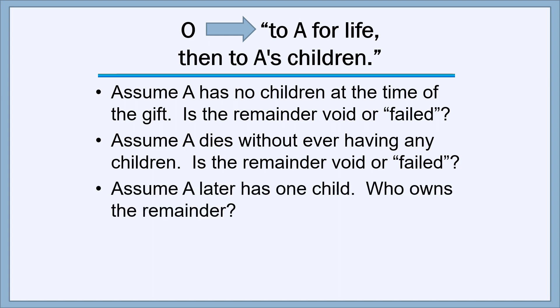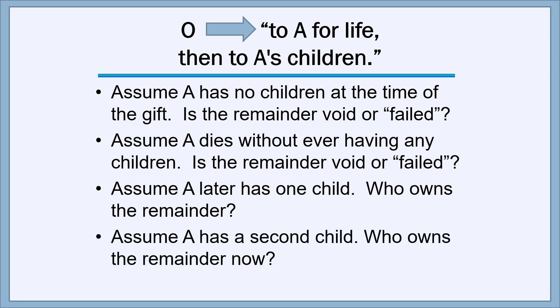Let's assume that after the gift is made, A has one child. Who owns the remainder now? Obviously, that child does, and at this point that child is the sole holder of the remainder. But if A has a second child, who owns the remainder now? Now it's split between the two of them — they both fit the definition of A's child.